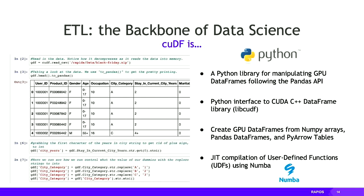cuDF also provides user-defined functions by just-in-time compiling Python functions using a package called Numba, which is a just-in-time compiler for Python that can compile for both CPUs and GPUs.